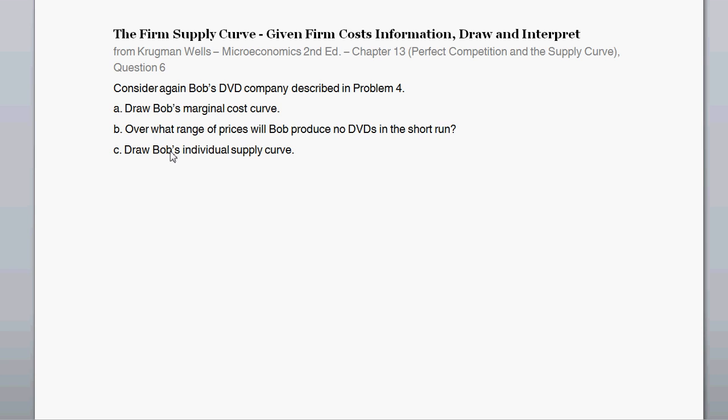We're going to talk about the firm supply curve. In the previous two questions, we were given basic information about Bob's DVD company. We were given fixed cost information and variable cost info. With that, we were able to calculate total cost, marginal cost, average variable cost, and average total cost.